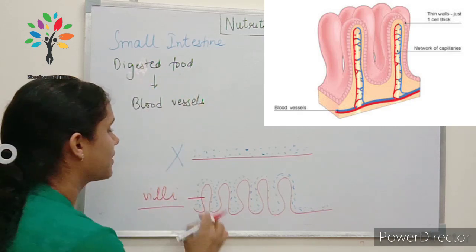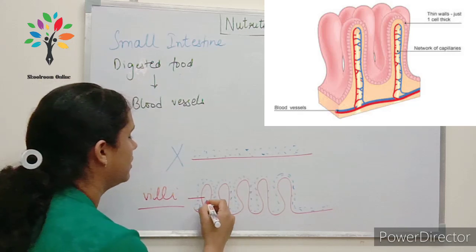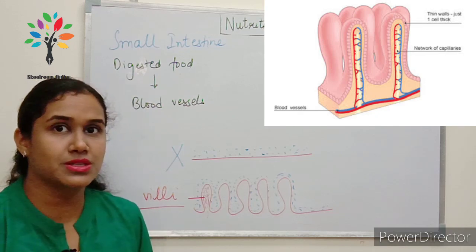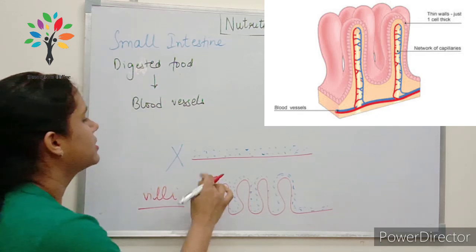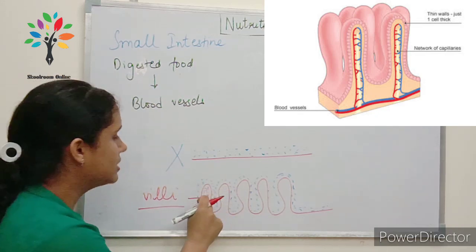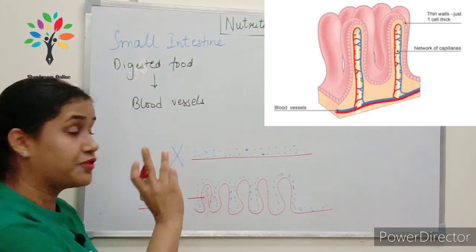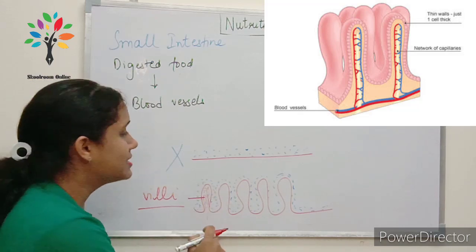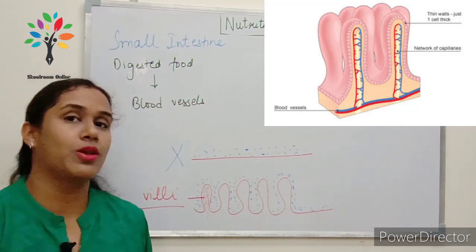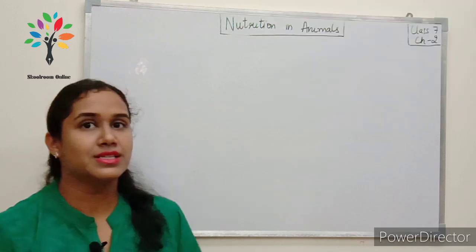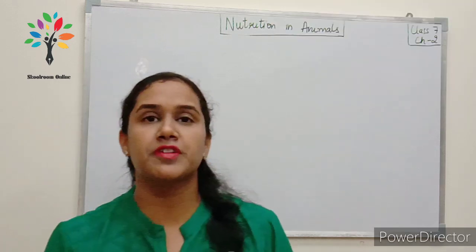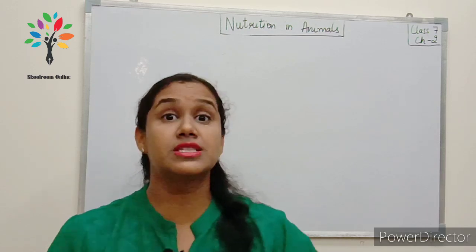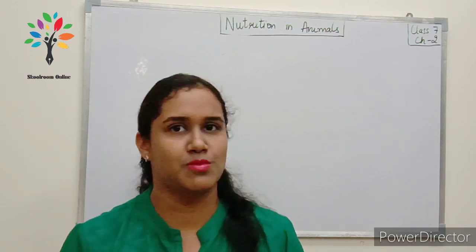These finger-like outgrowths have a very good network of blood vessels, so the digested food can be easily absorbed by the blood vessels and then transported to all parts of the body. The function of the villi in the small intestine is to increase the surface area for maximum absorption.